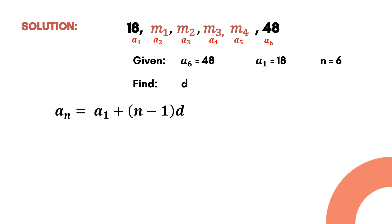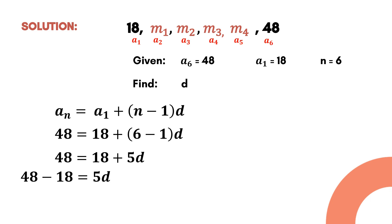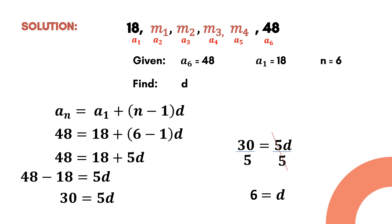To get the common difference, we use the formula for the nth term of an arithmetic sequence and substitute the given values. So we have: 48 = 18 + (6 − 1)d. Simplifying: 48 = 18 + 5d. Transposing 18 to the left side: 48 − 18 = 5d, which gives 30 = 5d. Dividing both sides by 5, the common difference d = 6.